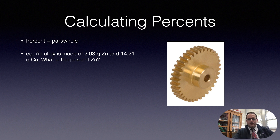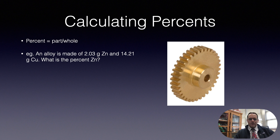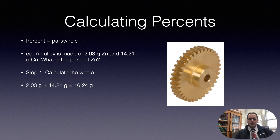Brass is a self-lubricating material. It's made of zinc and copper, so it's a homogeneous alloy. Here we want to know what is the percent zinc. We have the part which is zinc and another part which is copper, and we want to know what is the percent zinc. So we first calculate the whole by adding these two numbers up. The total mass is 16.24 grams.